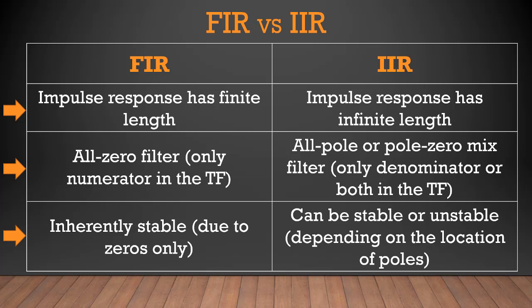The third difference is the consequence of the second point. Since FIR filter is an all-zero filter, each FIR filter is inherently stable, because there are no poles and the stability of the system is related with the location of the poles. In case of FIR filter, there are no poles and there are only zeros, so FIR filter is always inherently stable and there is no question of stability. Whereas in case of IIR filter, because it can contain both poles and zeros or be an all-pole filter, it is containing poles, so an IIR filter can be stable or unstable depending on the location of poles.